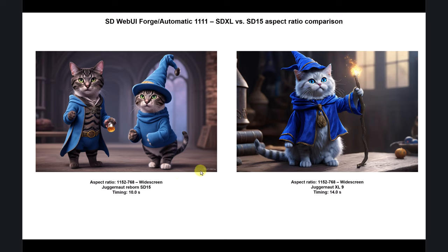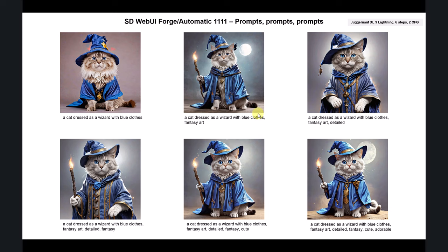There are also Stable Cascade models — something new. I tested one and you can go up to 2048 resolution, but it's super slow. SD 1.5 and XL are still alive compared to Stable Cascade. There's no doubt that this year resolution limits will increase and things will change very fast. Now let's also talk about prompts, which are very important.